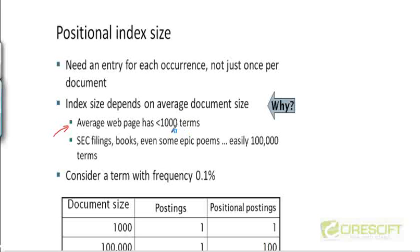Now an average webpage has about a thousand terms. But there are certain kinds of documents which are very long, which have a hundred thousand terms. Consider a term T which appears on average with a frequency of 0.1%, that is it appears just once every thousand words. This term will appear on average once on an average webpage, but in documents with hundred thousand words, the term T will occur a hundred times.